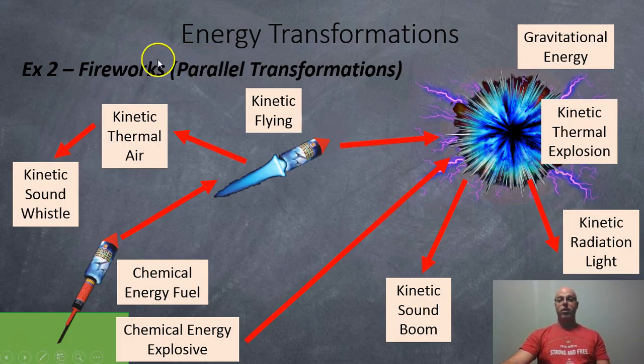Okay, here's another one. Fireworks. Here's a parallel transformation diagram. So two transformation systems going on at the same time. So here we got a fireworks rocket in the earth ready to go. So it's going to have chemical potential energy. It's going to have its fuel. And it's also got some chemical energy which is explosive.